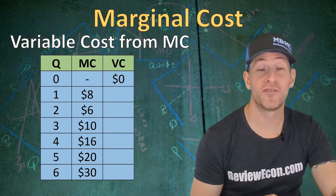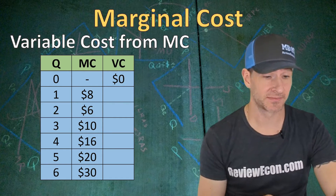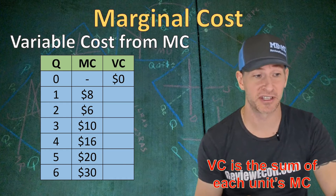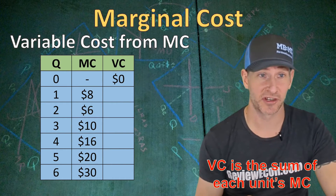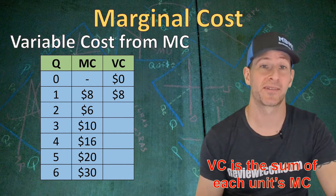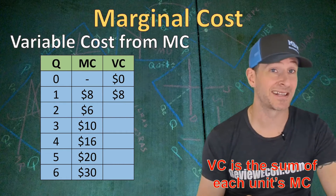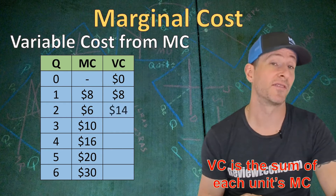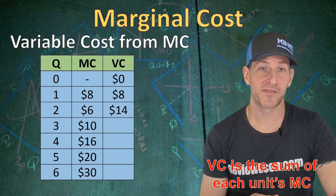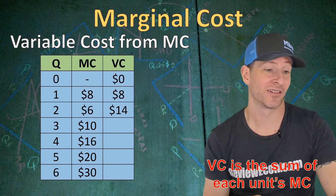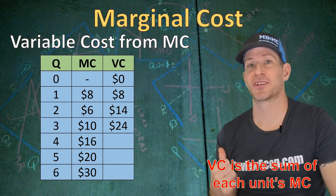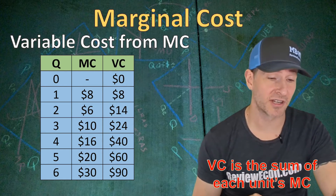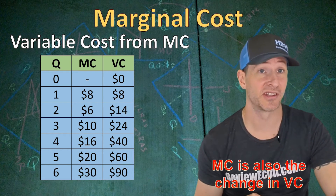Looking back at the numbers, we can derive variable costs from the marginal cost figures. The variable cost is the sum of the marginal costs for every unit produced so far. At zero units, variable cost starts at zero. The first unit increases total cost by $8, so marginal cost and variable cost are both $8. The second unit adds $6, bringing variable cost to $14. The third unit adds $10, bringing total variable cost to $24. Not only is the variable cost the sum of each unit's marginal cost, but the marginal cost is also the change in the variable cost, as well as the change in total cost.